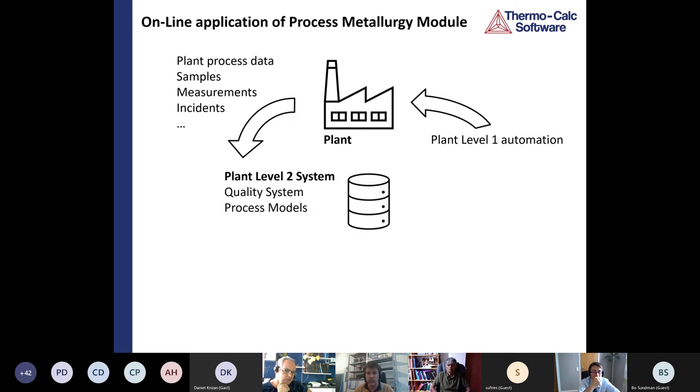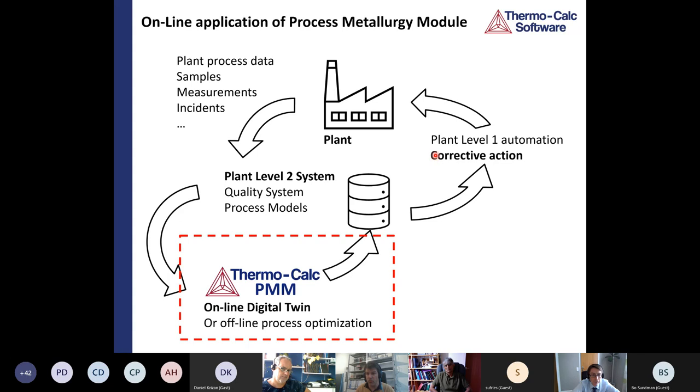And now this is the very last thing I'd like to show. Where do we go from here? In a typical steel plant, you've got a level one automation that tells the steel plant what to do. There are a lot of measurements coming out of the steel plant that are stored in the plant level two system. This huge, great big collection of data, this is what people doing, for example, artificial intelligence tap into and look at to try and find correlations to improve the process.